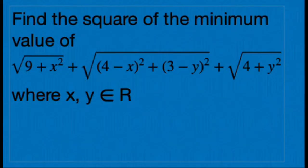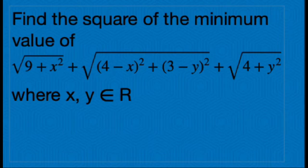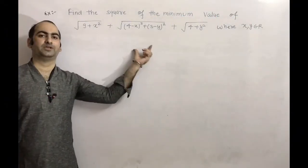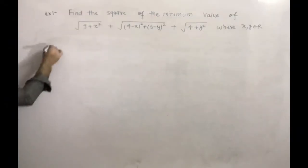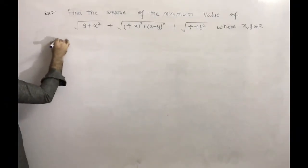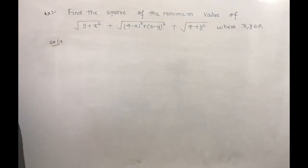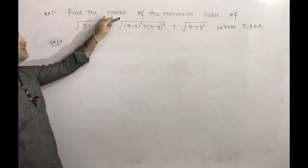The next problem is: find the square of the minimum value of √(9+x²) + √((4-x)²+(3-y)²) + √(4+y²), where x, y belong to ℝ. We will solve the problem here.